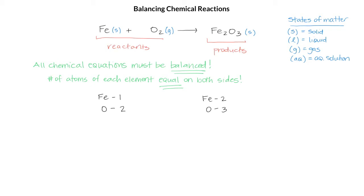We can see that we don't have a balanced reaction. To balance this reaction, we're going to use coefficients. A coefficient is the number placed to the left or in front of the formula.